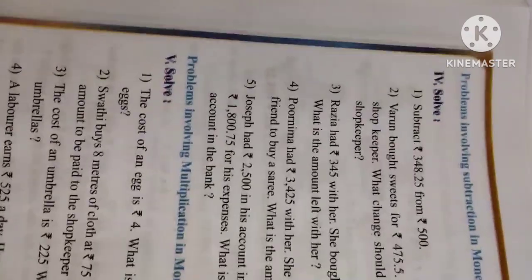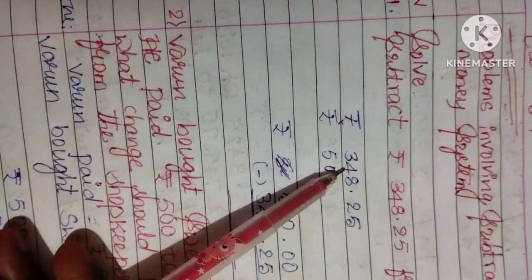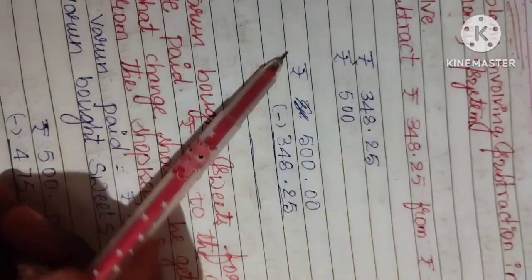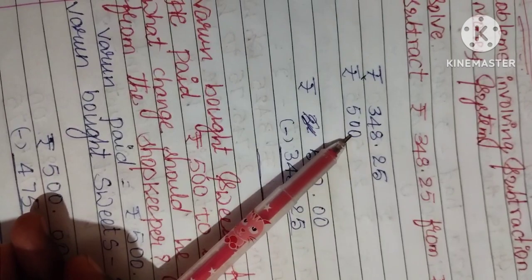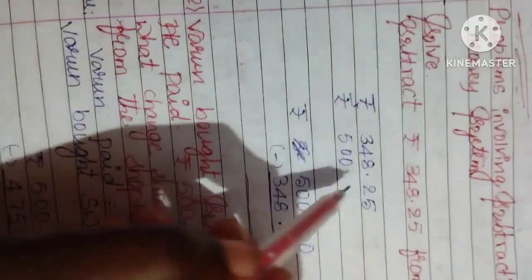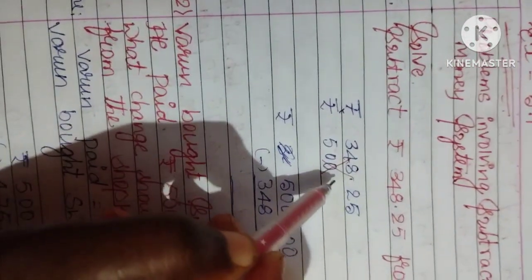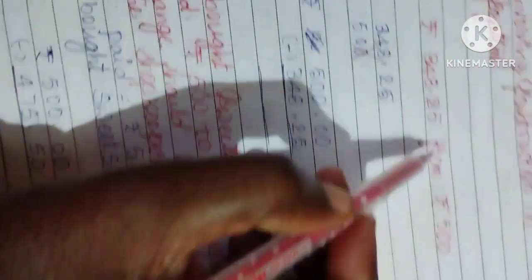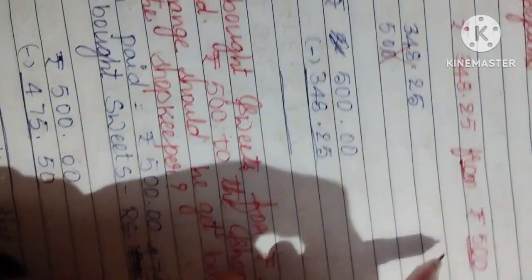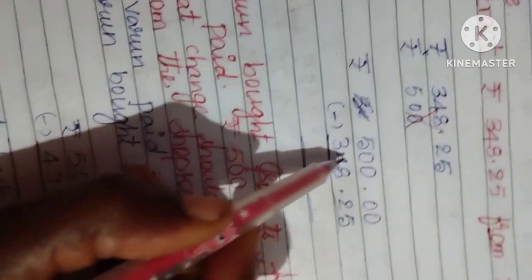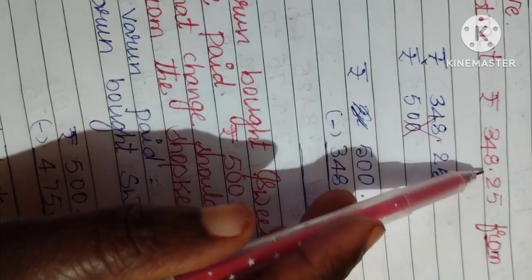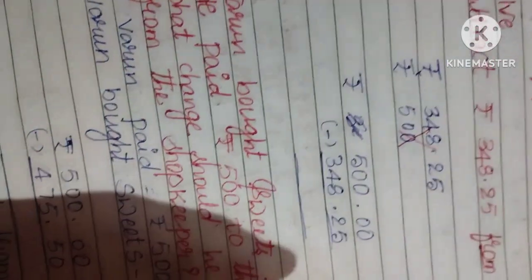See, Rs. 348.25 from Rs. 500. We can do the subtraction, but the answer is correct? No, so this is wrong. You can write from, what they are given, from. From in front of the number, always you want to write first. It means 500, and what they are given next: 348.25.